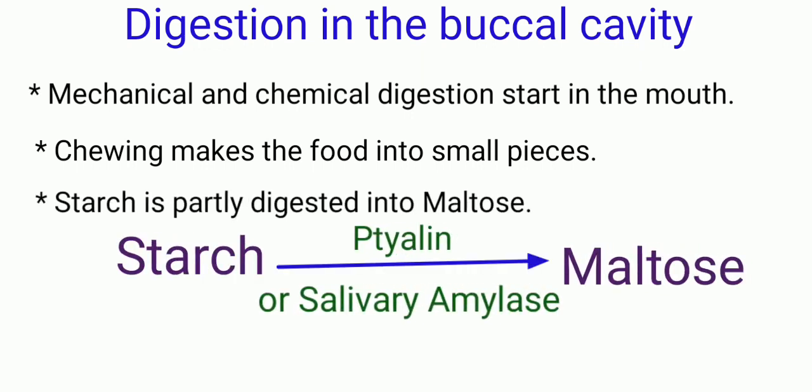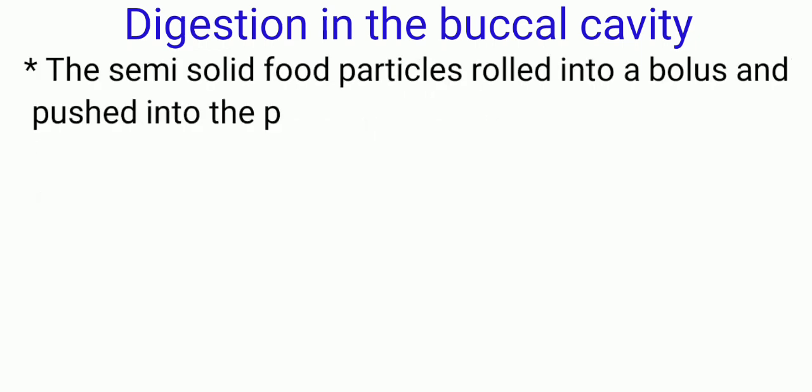As maltose is sweet, we sense the sweet taste. Ptyalin or salivary amylase converts starch into maltose. Immediately before swallowing, the semi-solid food is rolled into a ball or bolus and pushed to the posterior part of the buccal cavity.